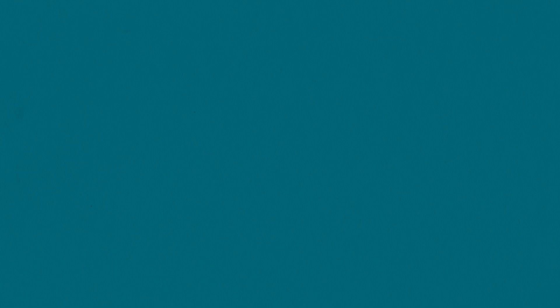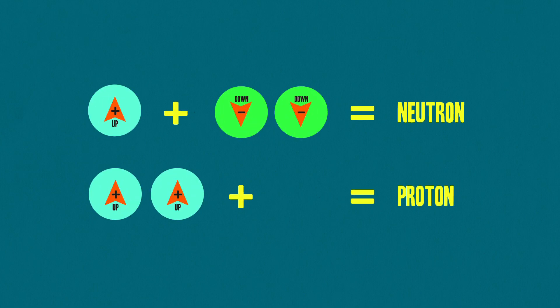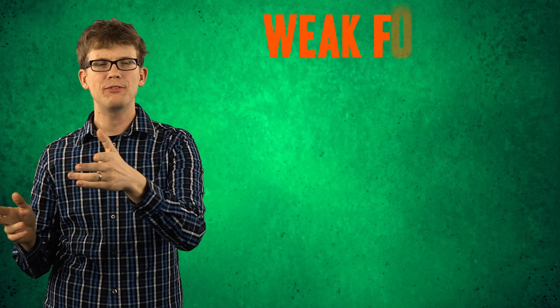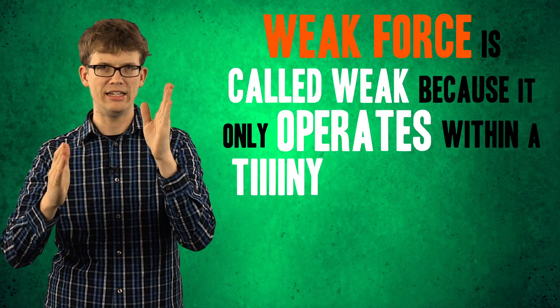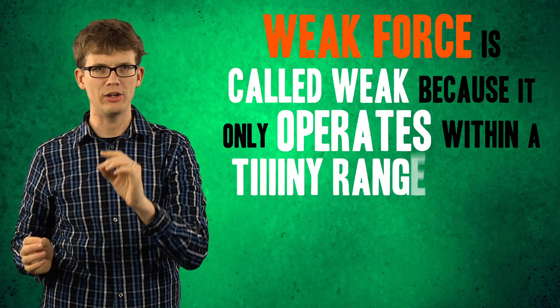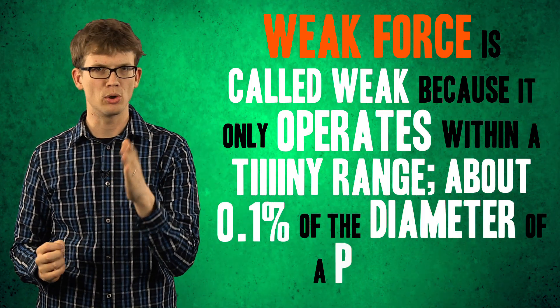Let's watch some weak interaction at work. How about we make a neutron change, or decay, into a proton? To do this, we're gonna need a neutrino passing by. Remember, neutrons are one up quark and two down quarks, and protons are two up quarks and one down quark. The weak force is called weak because it only operates within a teeny tiny range, about 0.1% of the diameter of a proton.